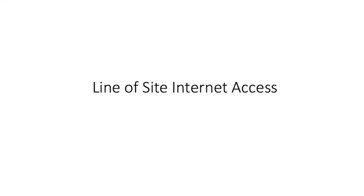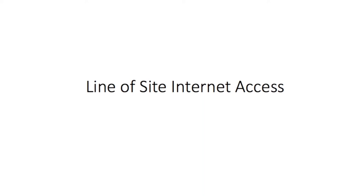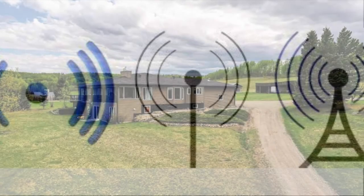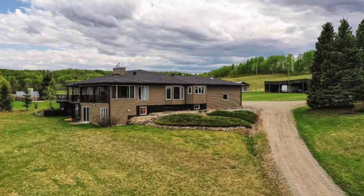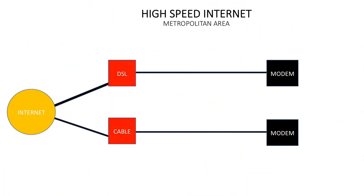Hello, my name is Trevor from Telecom Training, and today we're going to be talking about line-of-sight Internet. Line-of-sight Internet is a wireless service used to get high-speed Internet to rural households who do not have access to the traditional wired services like DSL or cable.